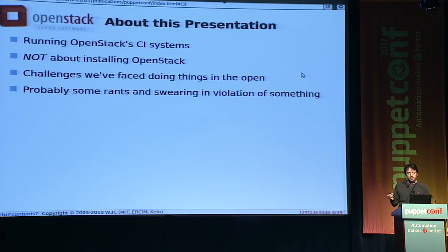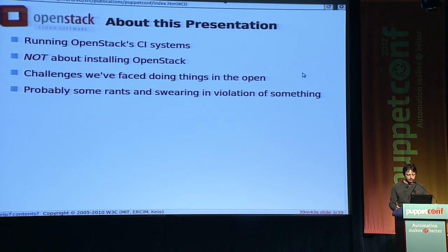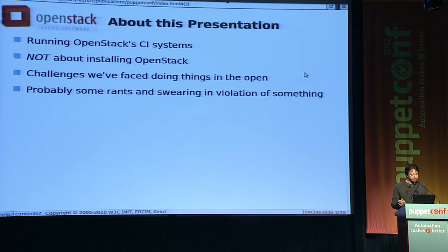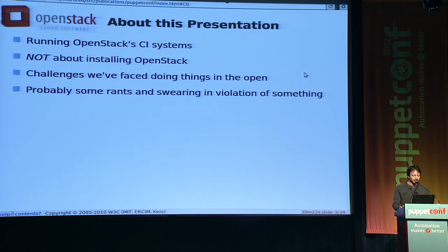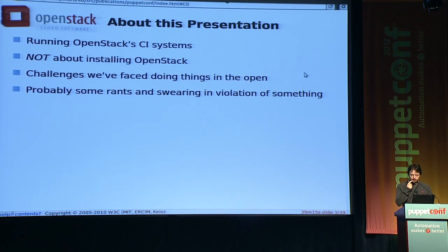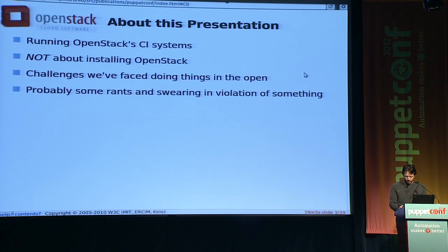This is not a talk about installing OpenStack. I believe there are at least 75 other talks here about interfacing with OpenStack and Puppet, but that is not what we're going to be talking about here. We're going to chat about challenges we've faced, because as an open source project, every single bit of things that we do, we do in the open — which is problematic when you're running production systems. Passwords, apparently, get tricky.